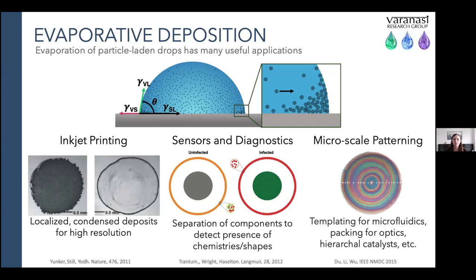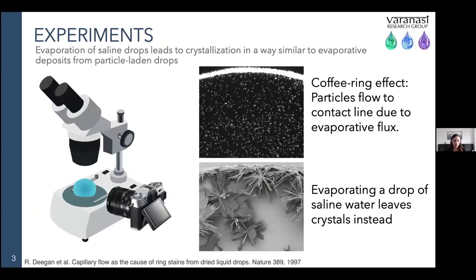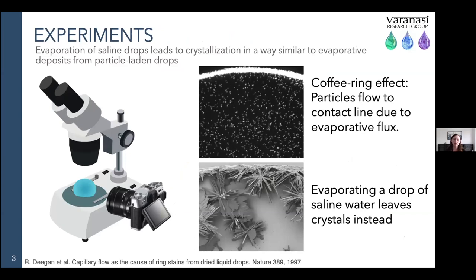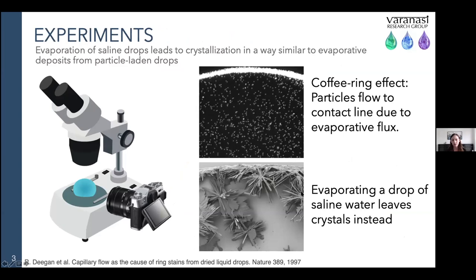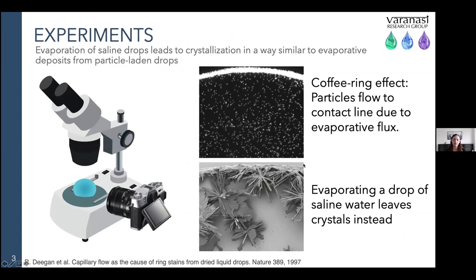A final emerging application is in microscale patterning and self-assembly, where deposition of colloids at this scale has a variety of applications for different types of patterns. In my experiment, I'm replacing the particle-laden drop with a saline drop containing dissolved salts. Just as in the coffee ring effect where particles accumulate at the outer edge, you also have formation of crystals at the outer edge due to evaporative flow and concentration polarization, leaving a ring shape made up of individual crystals.